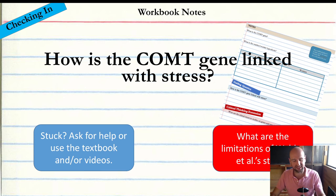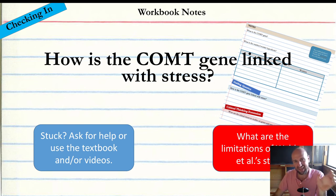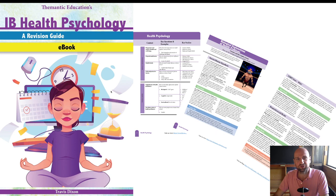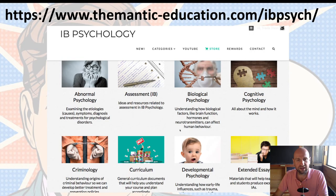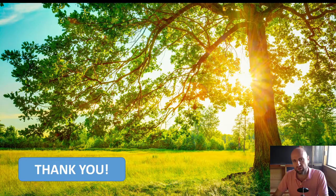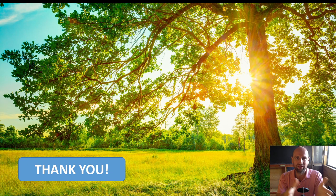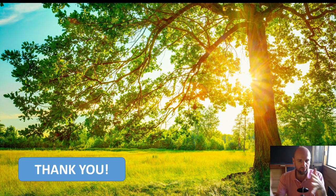The key thing to note from this lesson is what the warrior-worrier hypothesis is, understanding the terminology, and that basic study by Walder that connects genotype to different stress responses. We've also got the revision book that summarizes all this detail and covers the warrior-worrier hypothesis, plus an audiobook — all links are in the description. If you're a teacher, check them out; if you're a student, you might want to suggest your teacher has a look. These video tutorials are designed to give students another point of access to the information, alongside the audiobook, blog post, and textbook.